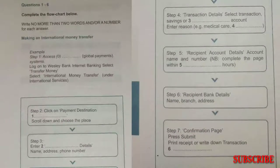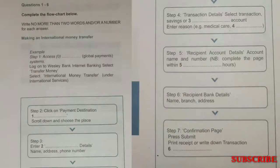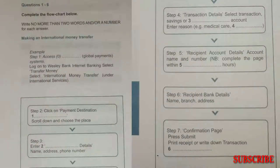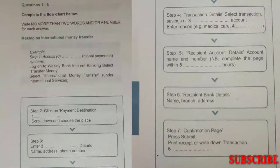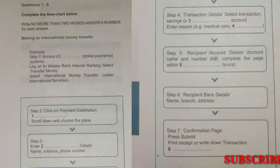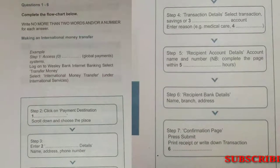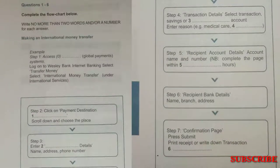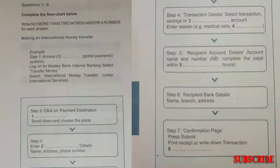Good. Then step 3 is to fill in your personal details: name, address and contact phone number. Done that. When I put in my phone number, my other details popped up automatically. Yes, that will happen. But take a moment just to check that everything is correct. Then we'll move on to transaction details.